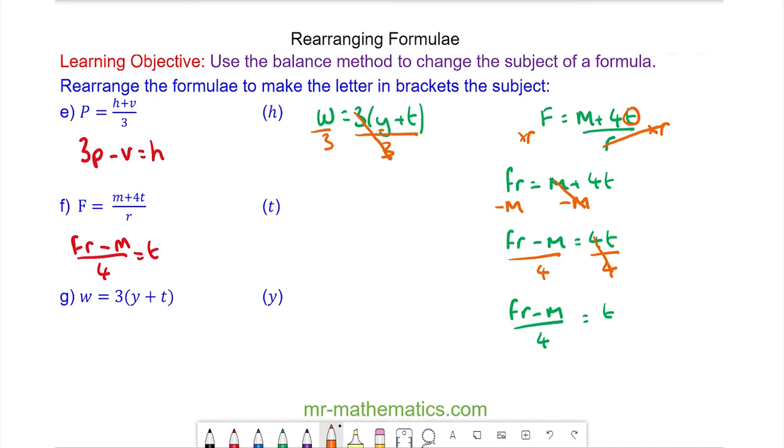So these will cancel. I'm left with w divided by 3 equals y plus t. I'll take away the t from both sides and these will cancel. So I'm left with w divided by 3 minus t equals y.